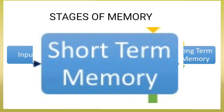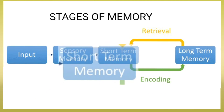Short-term memory, also known as active memory, is the information we are currently aware of or thinking about. While many of our short-term memories are quickly forgotten, attending to this information allows it to continue to the next stage, which is long-term memory. Most of the information stored in active memory will be kept for approximately 20 to 30 seconds.